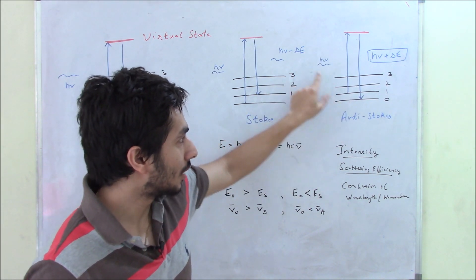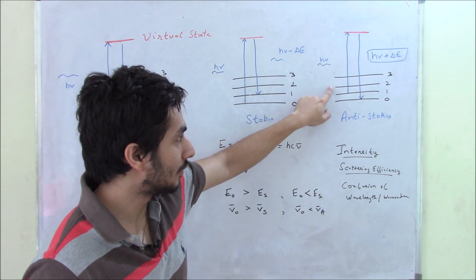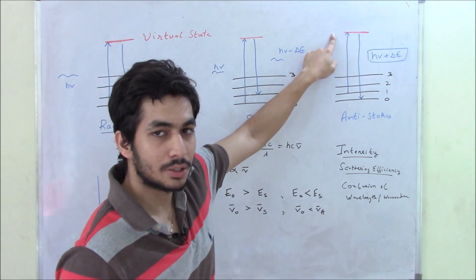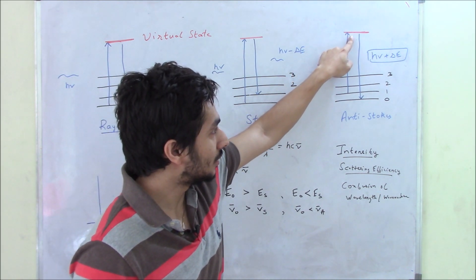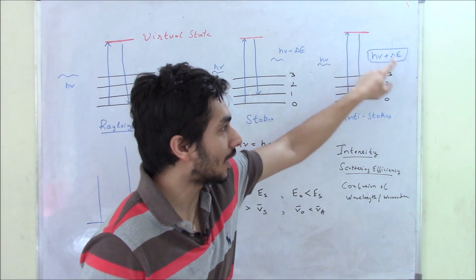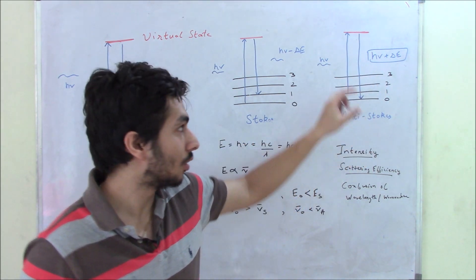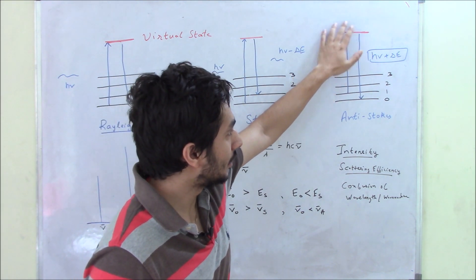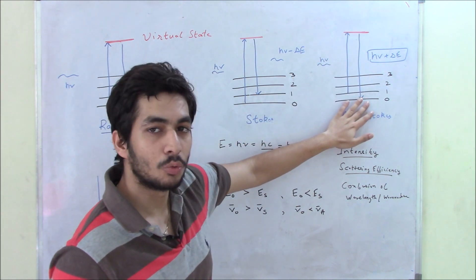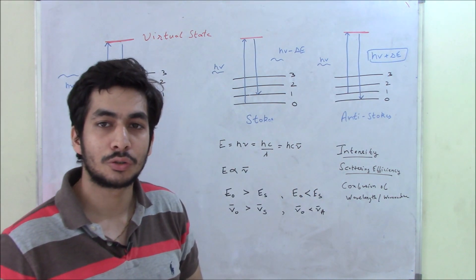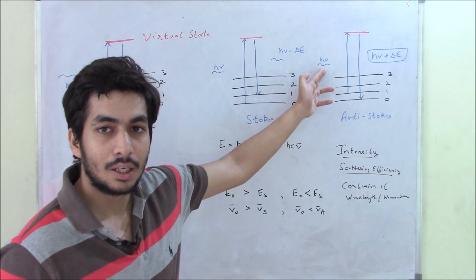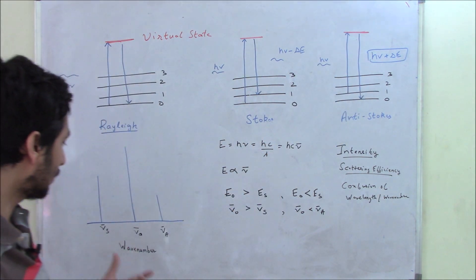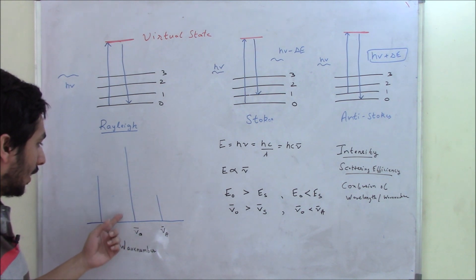In Anti-Stokes scattering, a molecule is already in the first excited state. It goes to the virtual state and comes back to the ground state. The energy of the scattered photon is greater than what was initially supplied, because the energy gap from virtual state to ground state is larger than from first excited state to virtual state. This gives rise to the Anti-Stokes line.